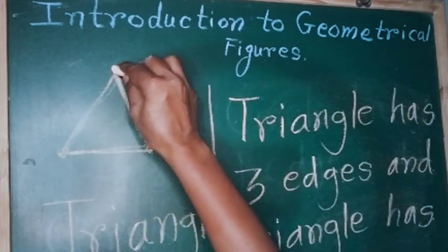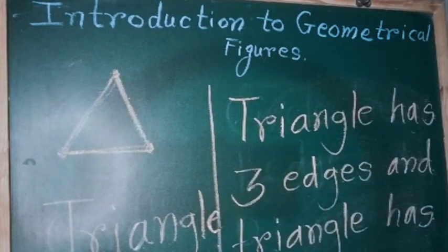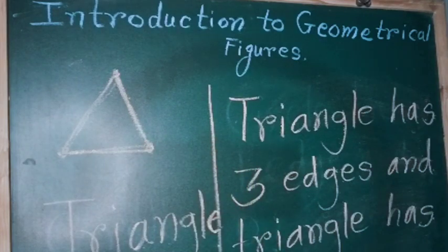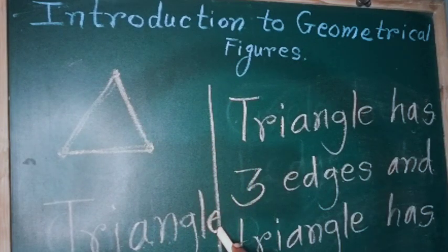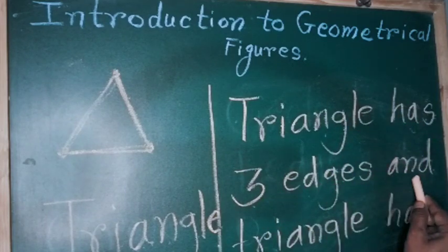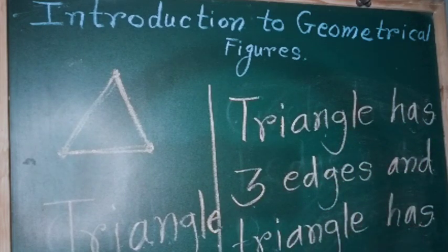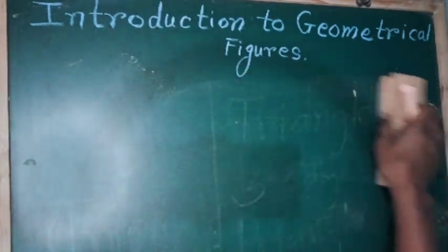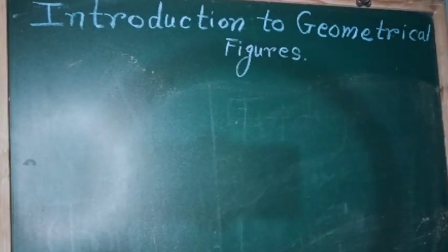Triangle has three edges and three corners. This is the figure of triangle — t-r-i-a-n-g-l-e. Let's see the next figure. Next figure is square.